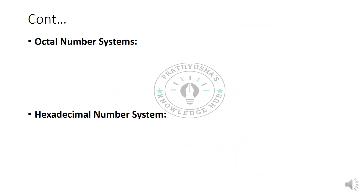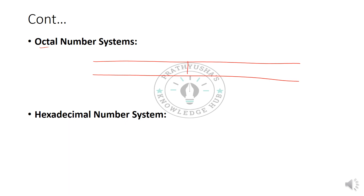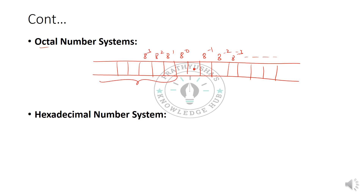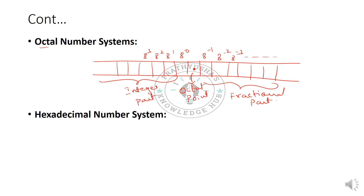For the octal number system, since octal means 8, on the right side we have 8 to the power of minus 1, minus 2, minus 3, and so on. On the left side we have 8 to the power of 0, 1, 2, 3, and so on. The left side represents the integer part, the right side the fractional part, and they are separated by the octal point.